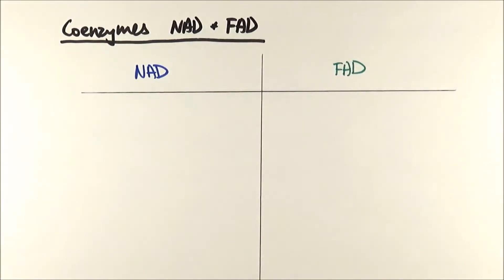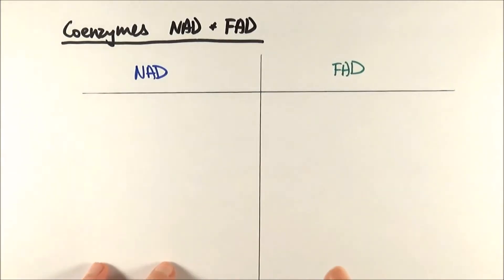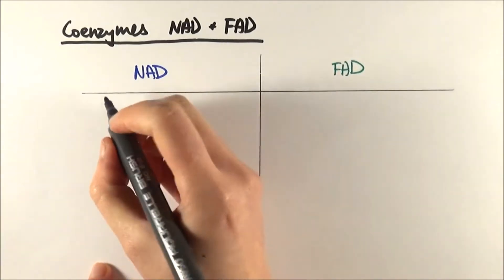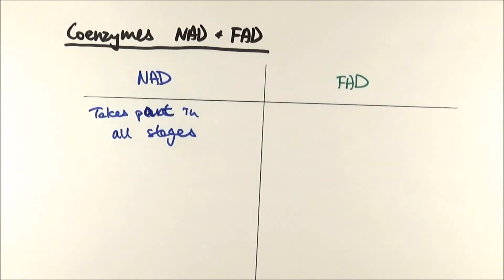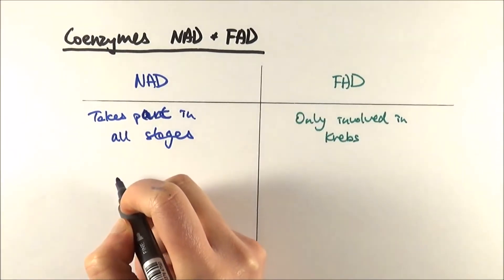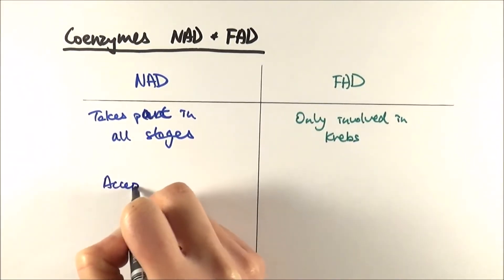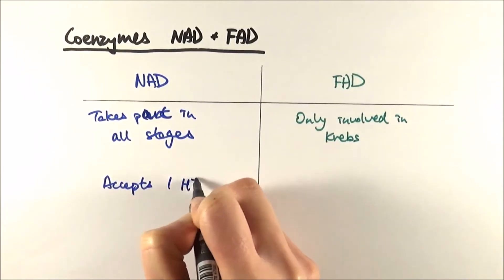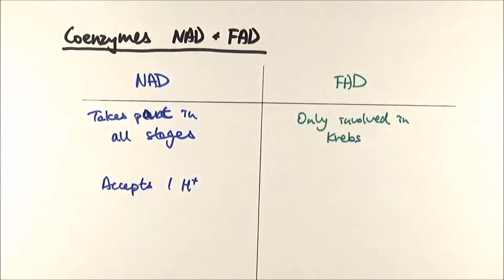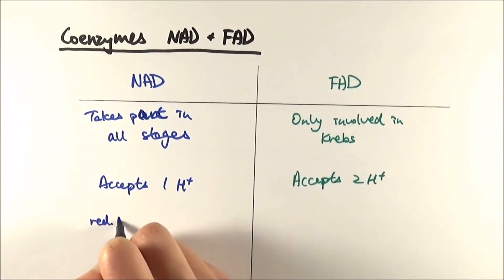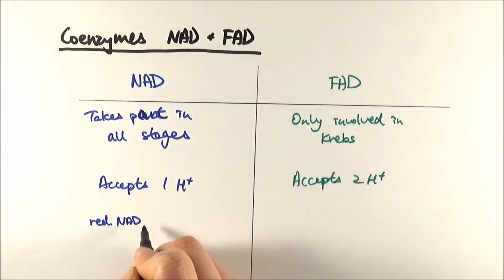The first difference is that NAD actually takes part in all of the stages in respiration, from glycolysis all the way till the end, whereas FAD only really comes along in the Krebs cycle. Another thing is NAD only accepts one proton, whereas FAD accepts two protons.